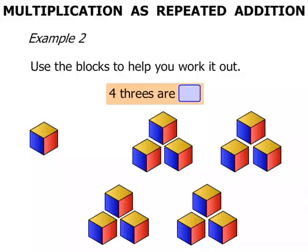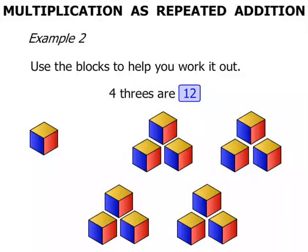Now 4 3's are something. Well let's count them 1 by 1: 1, 2, 3, 4, 5, 6, 7, 8, 9, 10, 11, 12. We can say that 4 3's are 12. Excellent! Well that concludes the lesson. Good luck with your questions.